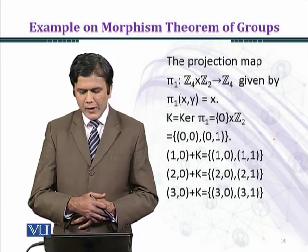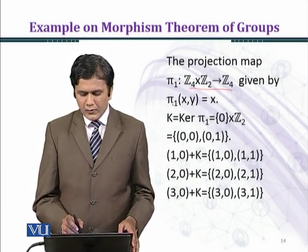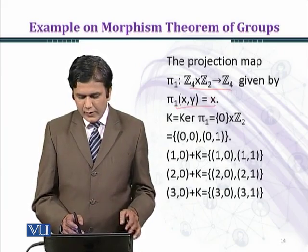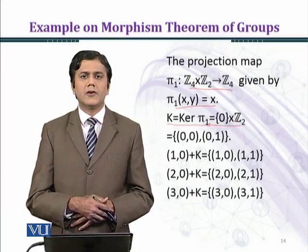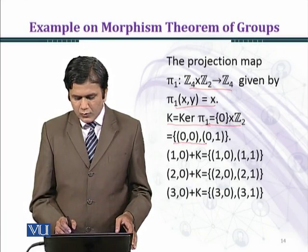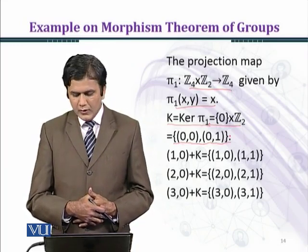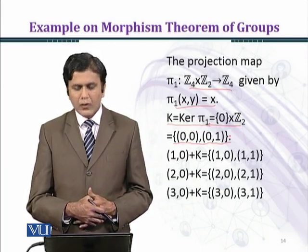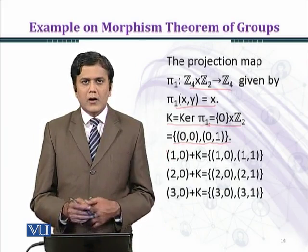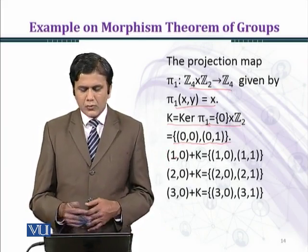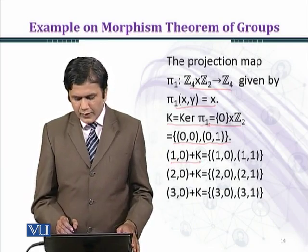The projection map pi1 from Z4 cross Z2 to Z4 is given by pi1(x, y) equal to x, and K equal to kernel of pi1, which is equal to 0 cross Z2, which is equal to {(0,0), (0,1)}. Here we are considering residue classes with the second coordinate under modulo 2. Our group is commutative, so left coset equals right coset. The coset (1,0) + K equals {(1,0), (1,1)}.